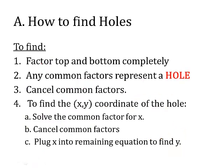So how do you find them? First, factor the top and the bottom completely. Second, any common factors that you find represent a hole. Like if it's x minus 2 over x minus 2, there is a hole right there where x is 2.